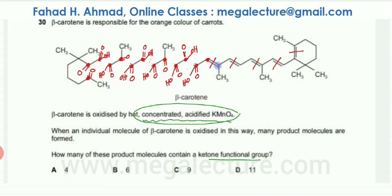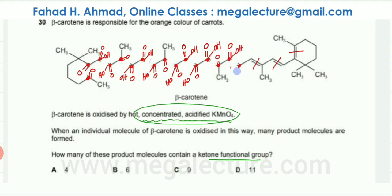Continuing through the remaining double bonds. The next break: one carbon only bonded on one side becomes a carboxylic acid, while the other bonded on both sides by carbon chains becomes a ketone. The following double bond: one carbon only bonded on one side gives a carboxylic acid, and the other also only bonded on one side gives a carboxylic acid. The next: one carbon gives a carboxylic acid, and the other bonded on both sides by carbon chains becomes a ketone.